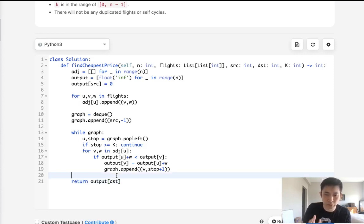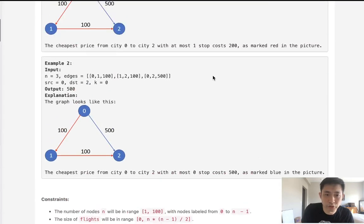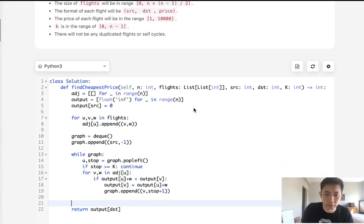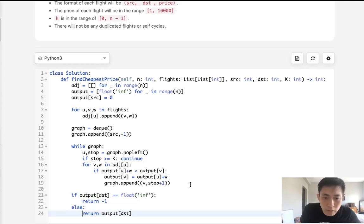So once we finish our traversal, we should be able to just return our output for the destination city, DST. But quick thing, it's possible that we're not able to get to this destination city, right? So if that's the case, they want us to return a negative one. They mentioned that somewhere here. So if there's no such route, we'll just output negative one. So if our output destination, if it still equals float infinite, then return negative one. Otherwise, return whatever we've calculated.